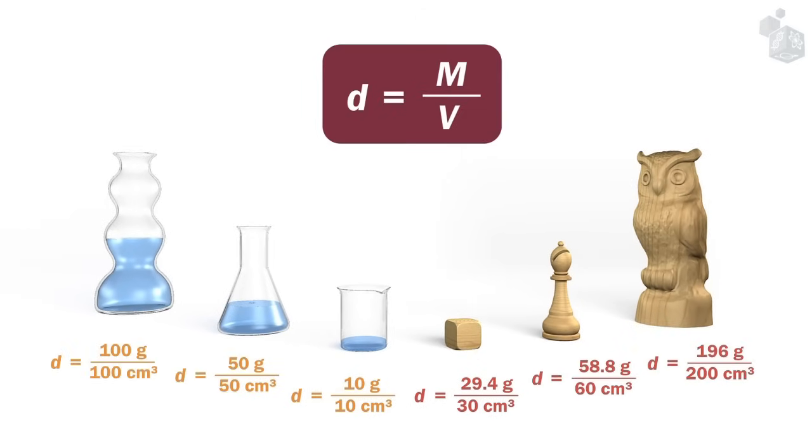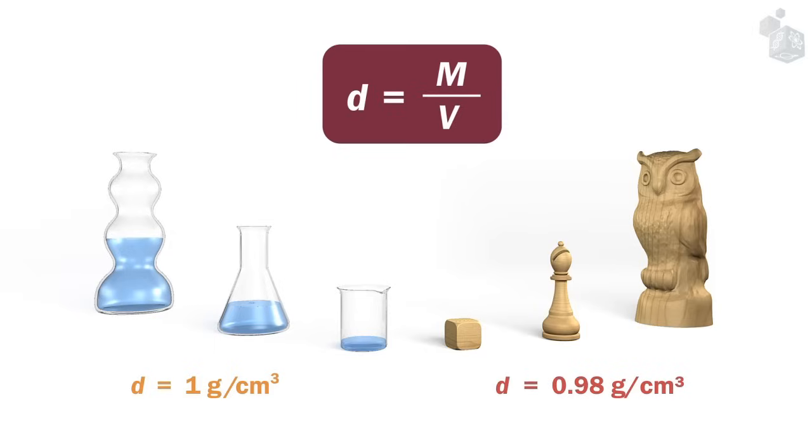Therefore, different objects made of the same material always have the same density, regardless of their mass and volume.